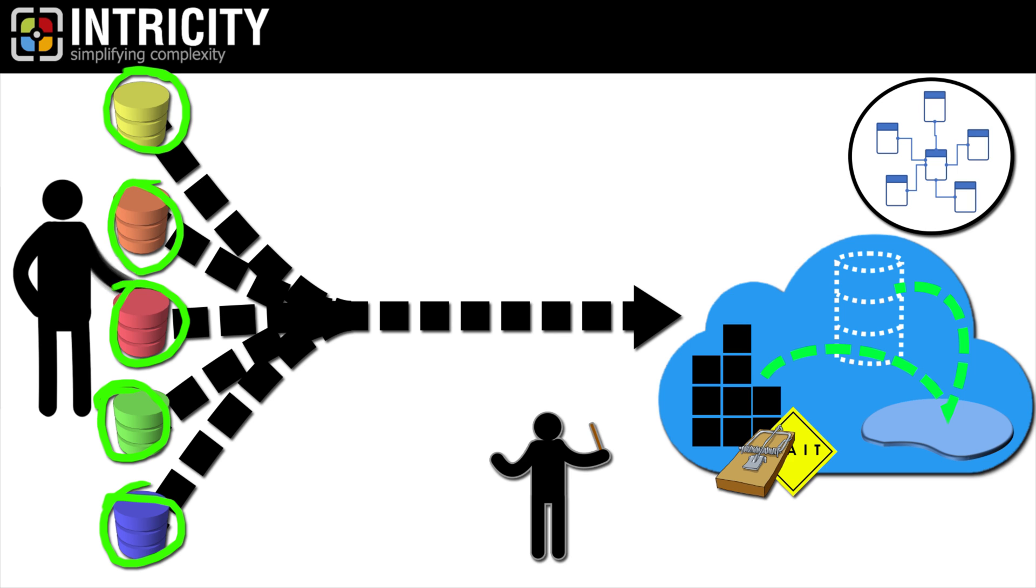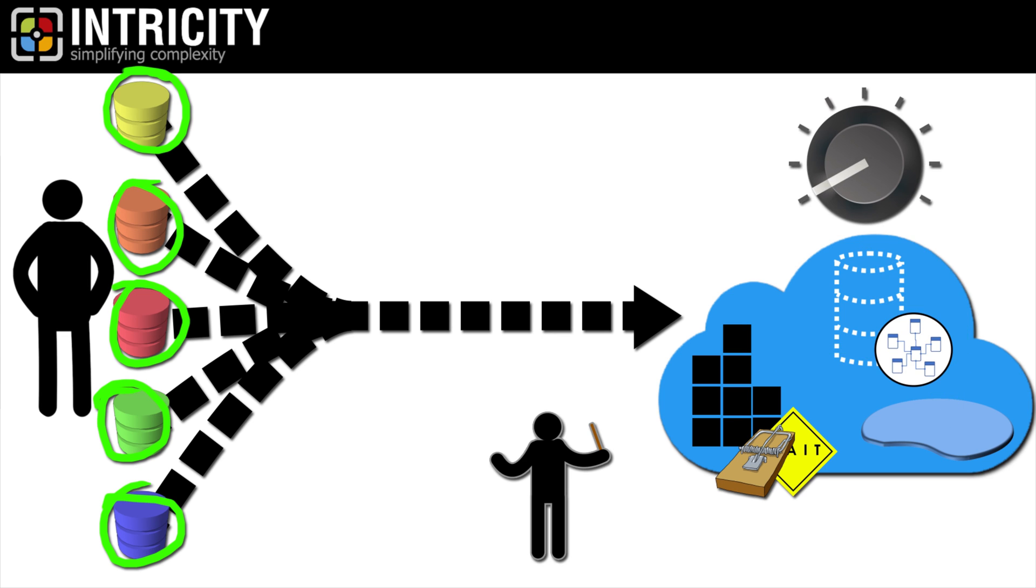Another option that the cloud gives us is the ability to dial the capacity of our compute allocation. Databases like Snowflake let us wake up the compute capacity, then shut it down on demand while only billing us for what was used.